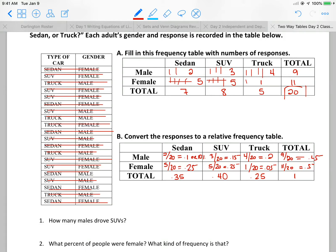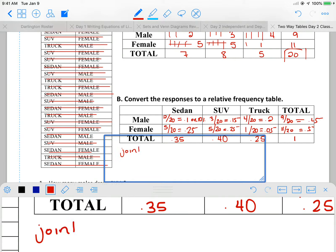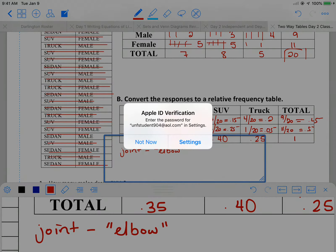So when we talk about our three types of frequency, we discussed them yesterday a little bit. But we had three types. We had joint frequency. And a little helpful reminder for that is think of it like your elbow. It's where your two bones come together. So joint frequency would be where male and sedan come together. So if you think of a joint, think of your elbow joint.